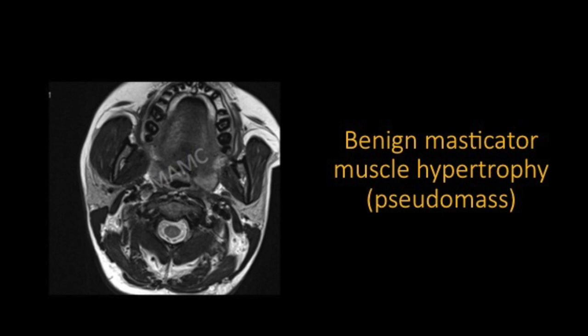Another young patient presented with asymmetric prominence of the right cheek. On MRI, comparing with the other side, we see a prominent right-sided masseter muscle whereas the left masseter is normal. However, the muscle is otherwise normal — there is no focal lesion and no signal alteration within the muscle. This is a case of benign masticator muscle hypertrophy. We need to be aware of these pseudomasses, which may be unilateral or bilateral. Causes attributed include excessive gum-chewing, bruxism, or TMJ dysfunction.